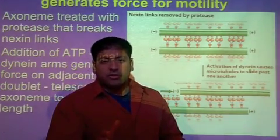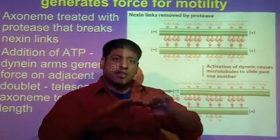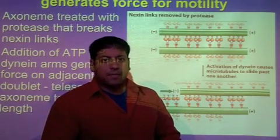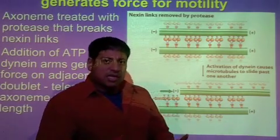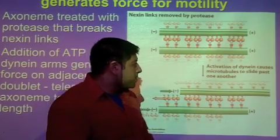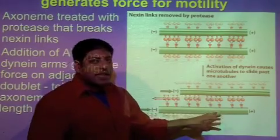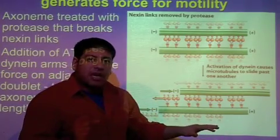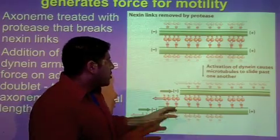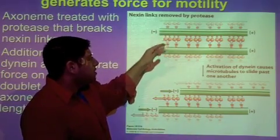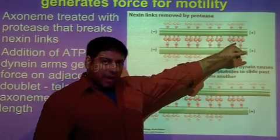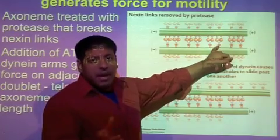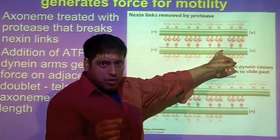The axoneme is what we called the structure before when we were looking at the arrangement of the outer doublets — it's just the cytoskeletal proteins. The proteins we're interested in right now are the microtubules, shown in green. And in between the microtubules is dynein, the minus-end directed motor protein.